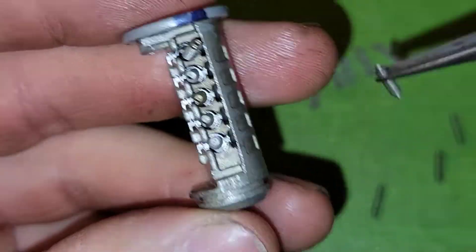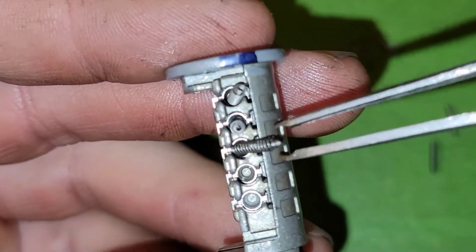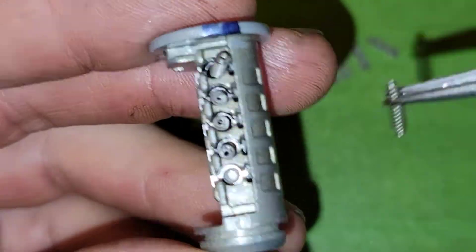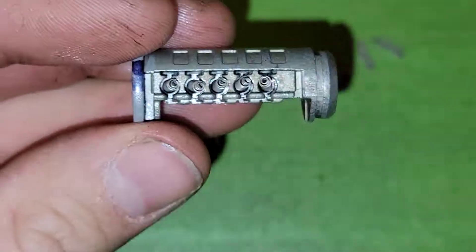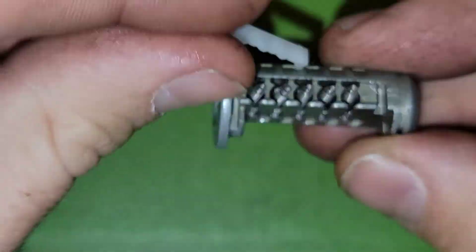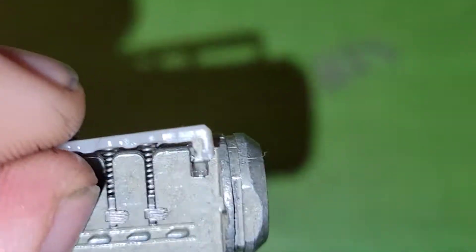So the biggest differences are how the wafers actually slide and interact with the pins that interact with the key. We can call those the key pins for now. I don't have the exact technical terminology that Kwikset is using for all these parts so that's just what I'm going to refer to them as.